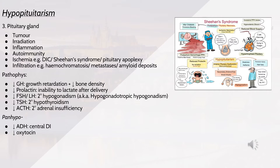Sheehan syndrome often presents as gonadal failure with inability to lactate, as well as TSH deficiency and ACTH deficiency. Over time, the necrosis is replaced by fibrous tissue and shrunken glands. Pituitary apoplexy is the infarction of the pituitary gland due to ischemia or haemorrhage, and it mainly affects the anterior pituitary gland since the blood supply comes from a lower pressure arterial system.